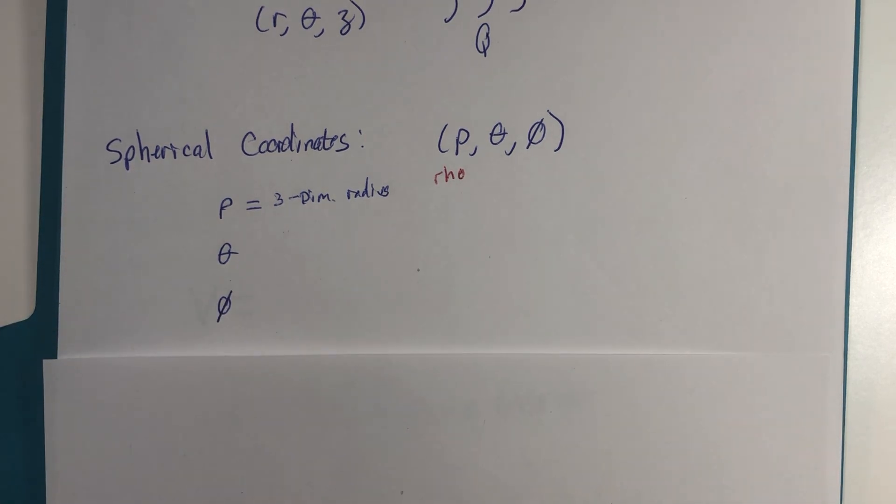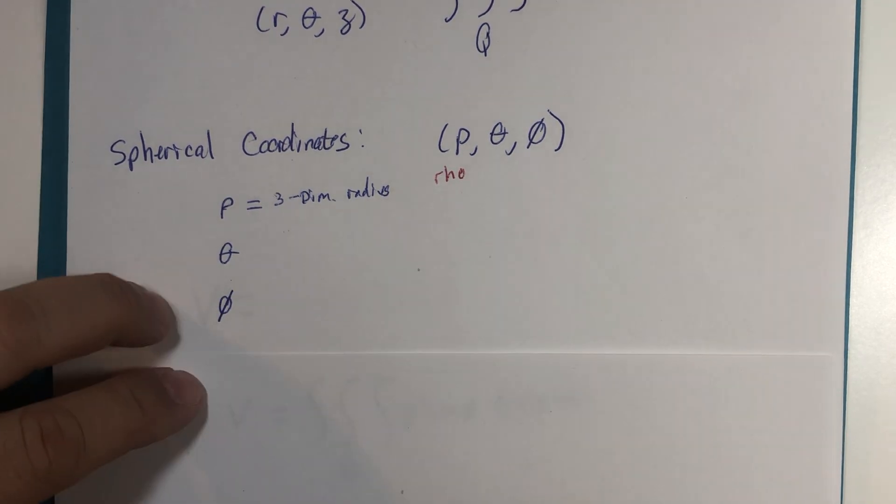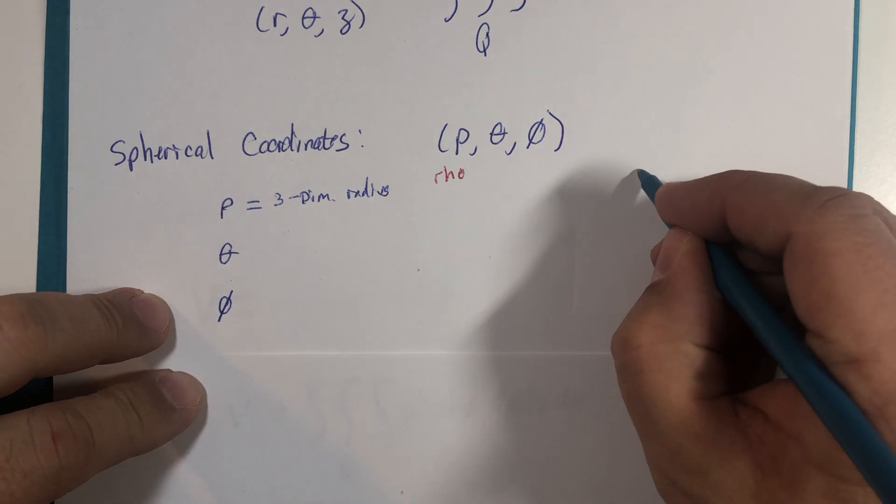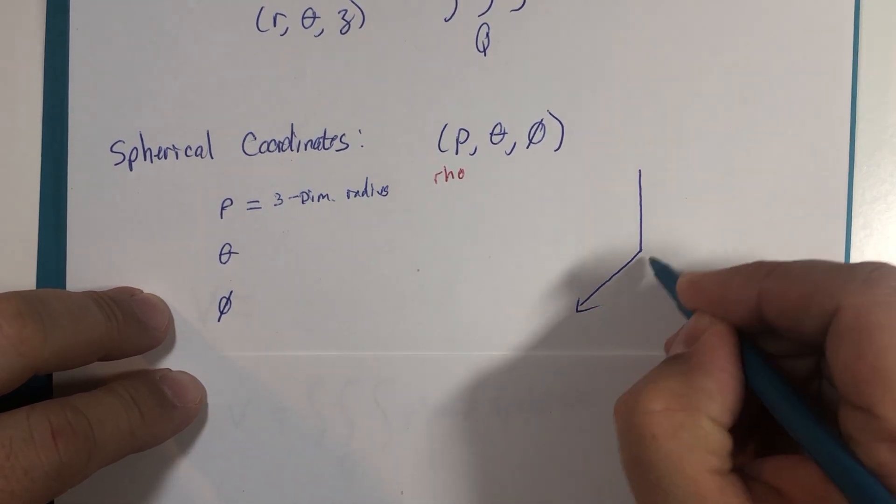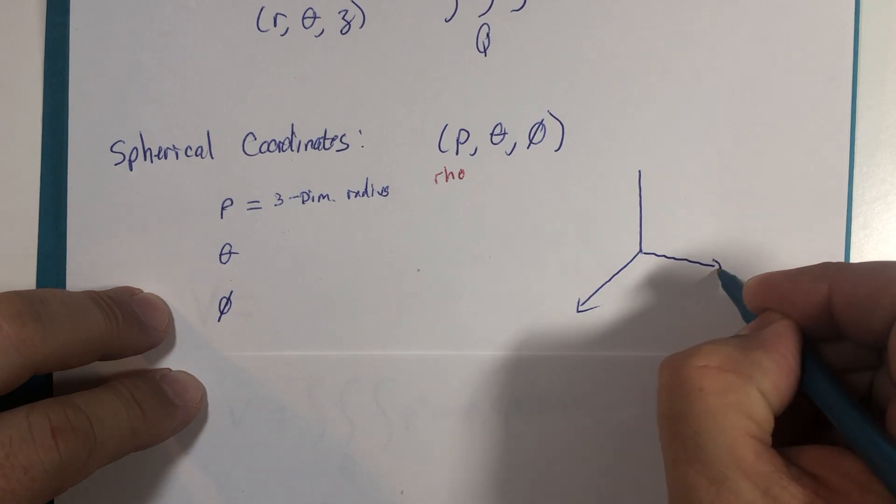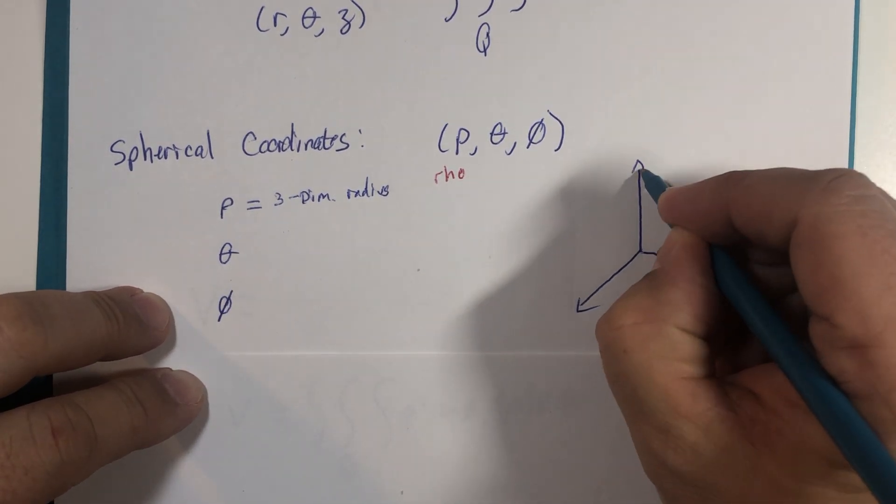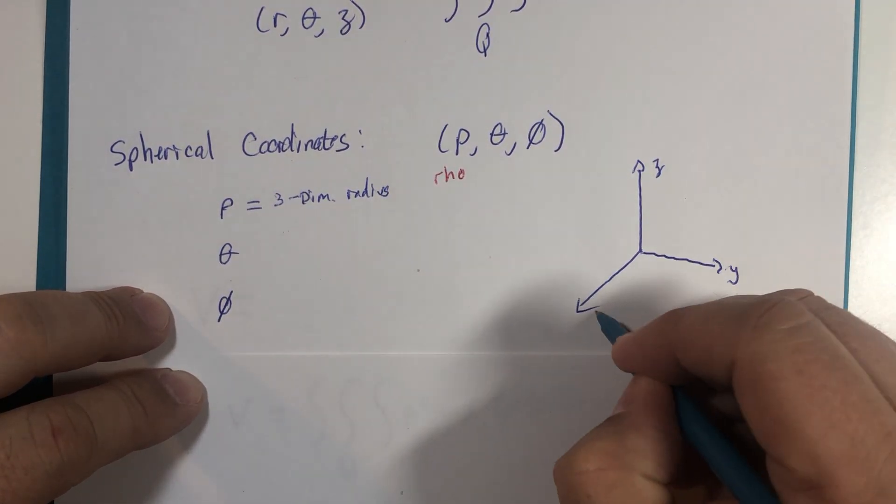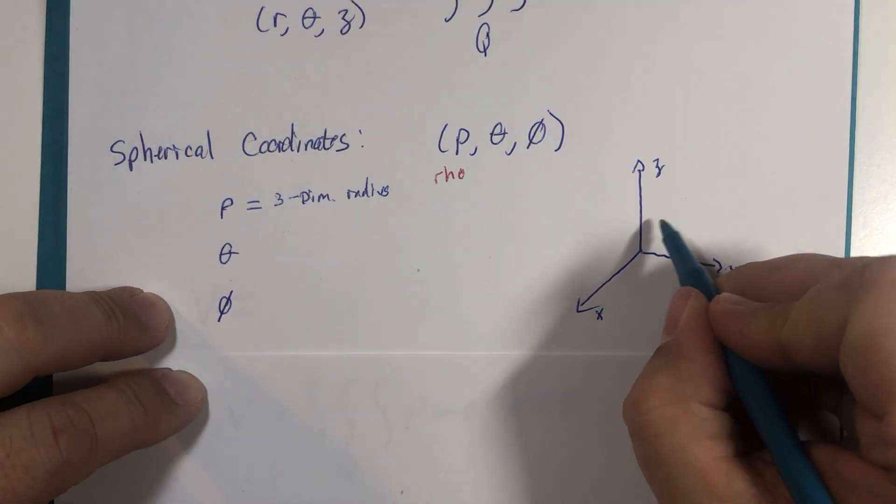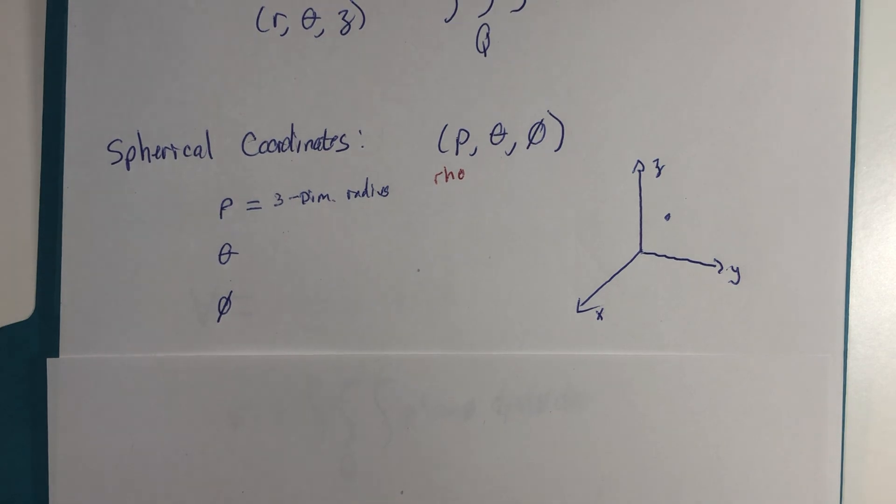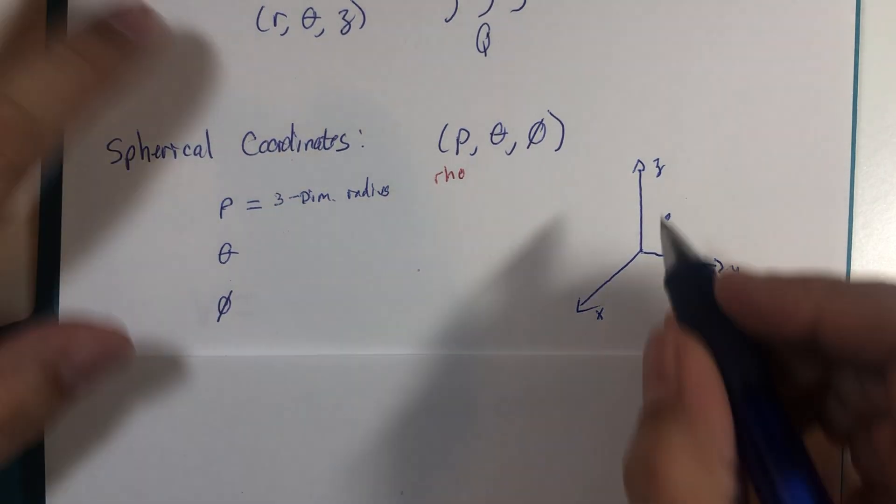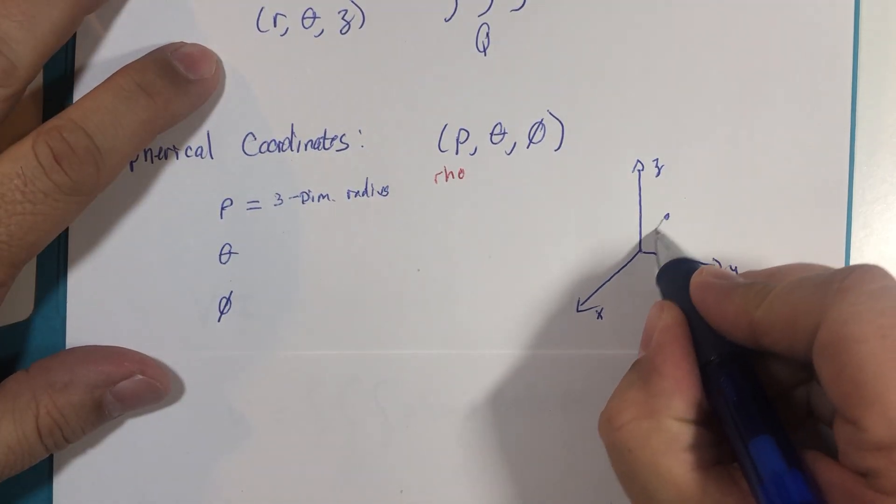So if I were to attempt to go like this, here there's the y-axis and there's the z-axis, that's x of course, and we had a point. This distance from the point to the origin in three dimensions, that's rho.